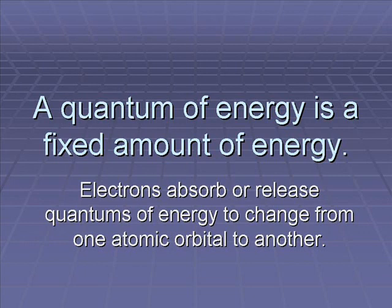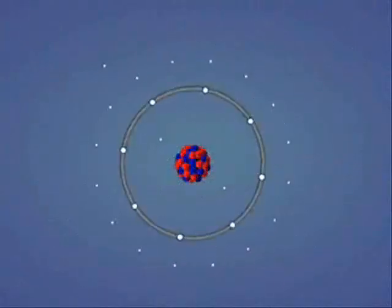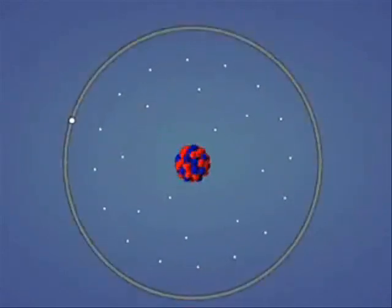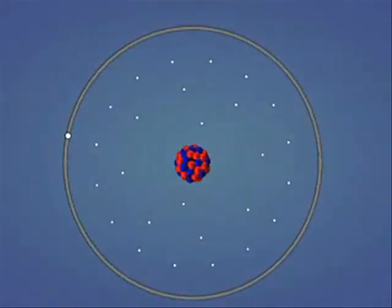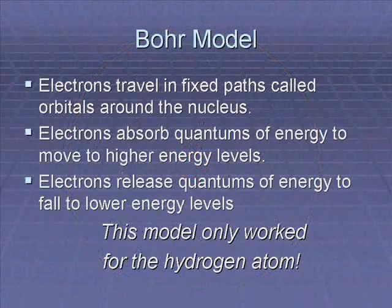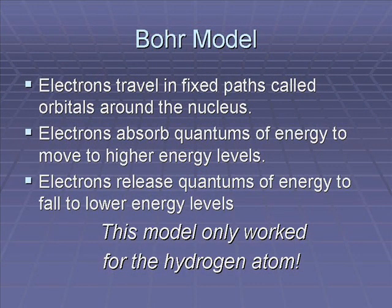Bohr defined a quantum as the energy required to move an electron from one energy level to another. The energy levels of an atom were said to be quantized. According to Bohr, the higher the energy levels of an atom, the more closely that they were spaced. Therefore, it took less energy for an electron to change energy levels the farther from the nucleus that the energy levels were. The Bohr model gave results in agreement with the behavior of the hydrogen atom, but agreed less with more complex atoms.